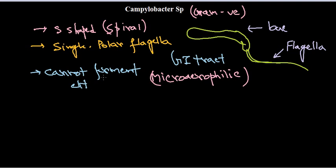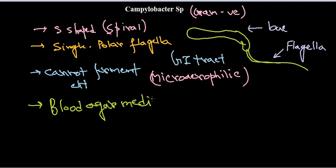Another important thing is that they cannot ferment carbohydrates. Some bacteria can ferment glucose or lactose, but Campylobacter cannot ferment any of these. We can culture this bacteria in special selective media such as blood agar containing antibiotics to inhibit the growth of other fecal coliforms. Since they are present in the GI tract, we can also find them in feces, and they can be cultured in blood agar media.